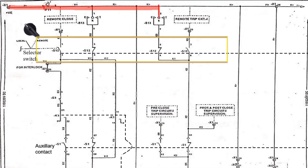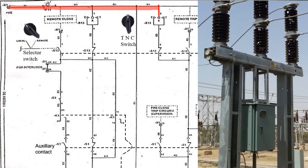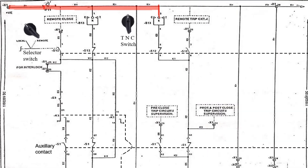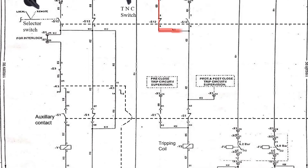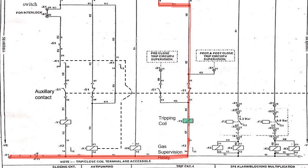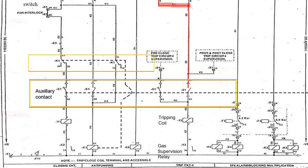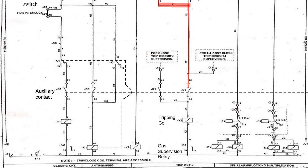Now again, as we have seen in our previous videos, we will follow the same logic. In local mode, the selector switch is connected to local mode, and when the operator performs the trip operation from where the circuit breaker is placed in the switch yard, the current flows like this, passing through the tripping coil, gas supervision relay and fuse, completing the trip circuit. As soon as the trip circuit gets completed, the tripping coil energizes, and as soon as the circuit breaker gets tripped, its auxiliary contact S1 along with the anti-pumping relay K1 changes its contact — NO becomes closed and NC becomes open. Also, the tripping coil gets de-energized. So with this, it completes the trip circuit in both local and remote mode.